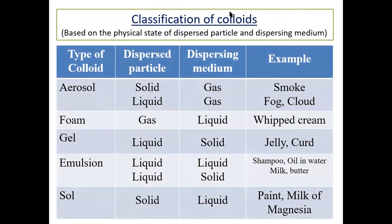This is the classification of colloid particles. The type of colloid depends on the dispersed particle and the dispersing medium. When the dispersed particle is solid and the dispersing medium is gas, the example is smoke. When the dispersed particle is liquid and the dispersing medium is gas, the example will be fog or cloud.